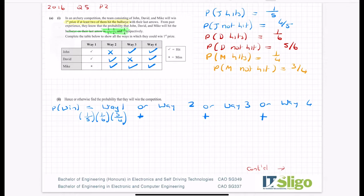Way two: we have John not hitting so it's four-fifths, David hitting which is a sixth, Mike hitting which is a quarter. You can see now why I wrote all of these down here just for convenience. Way three: John is hitting, David is not hitting, Mike is hitting. Or way four, they're all hitting, so we have a fifth by a sixth by a quarter. I'm just scanning across for two small numbers, a big number, big number, two small numbers. They look good.